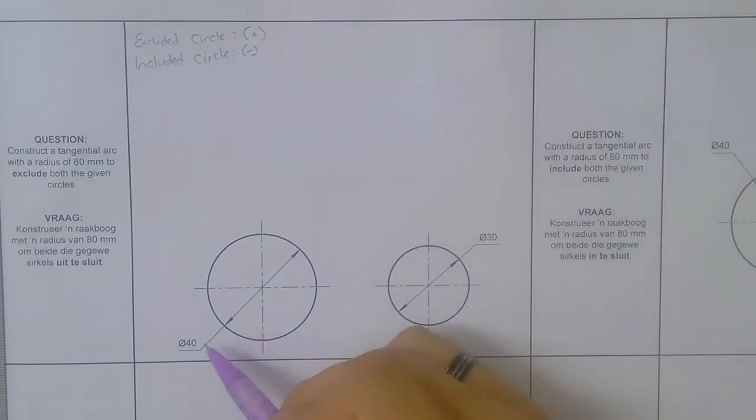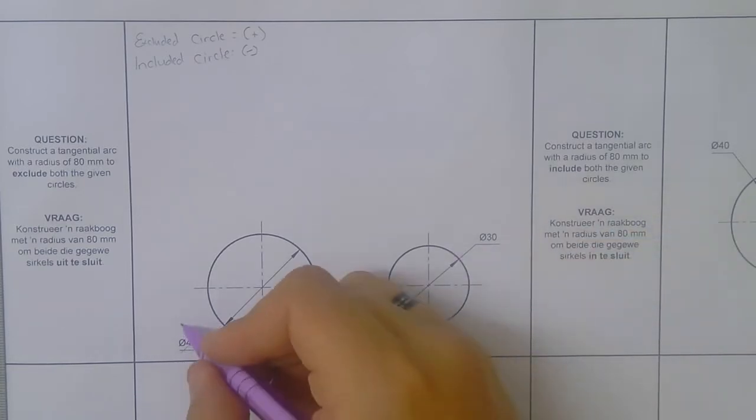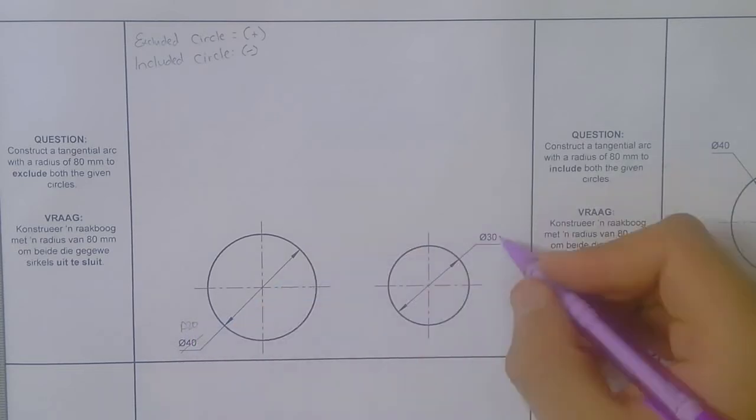So now we look at the diameter of both of these circles. We want the radius. So that's 20 and that is 15.